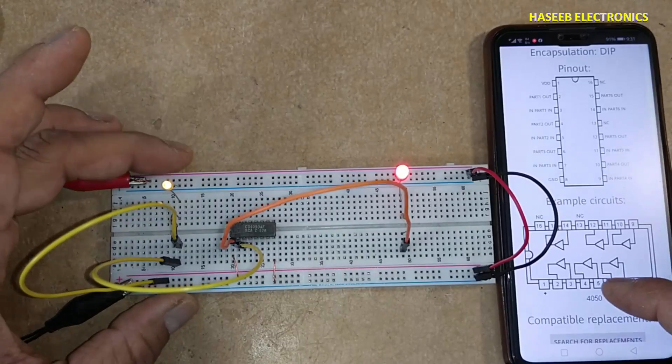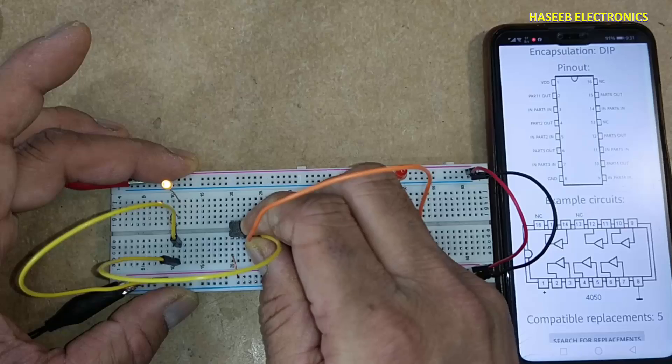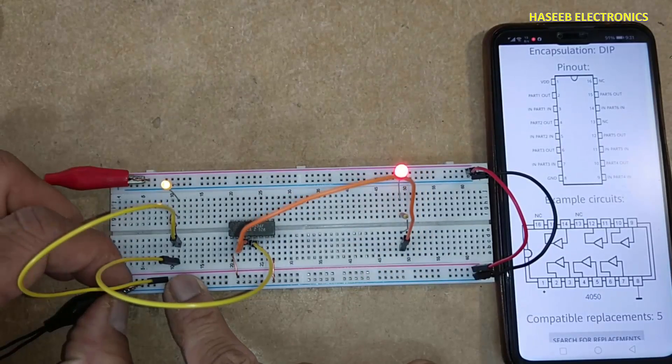Second buffer output from pin number 4. Input from pin number 5. Input high, output high.